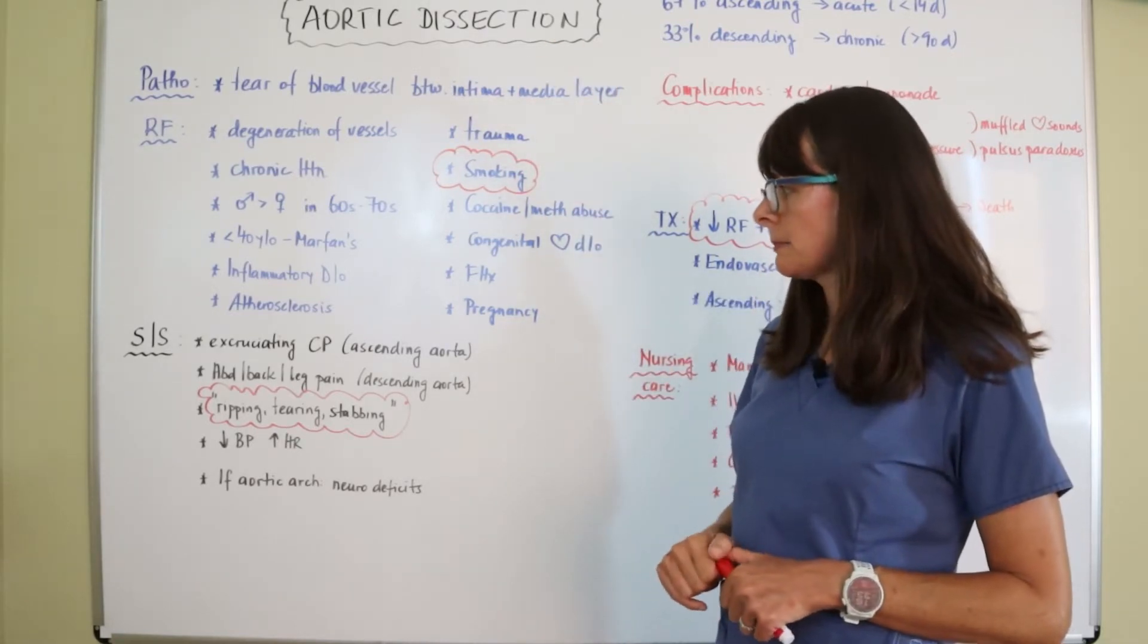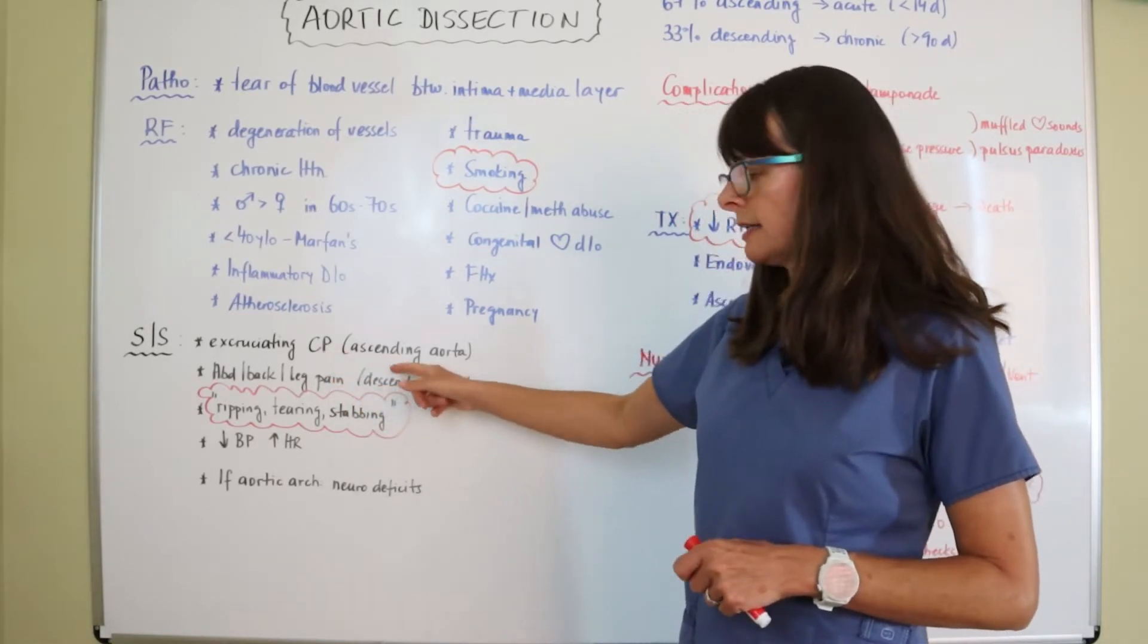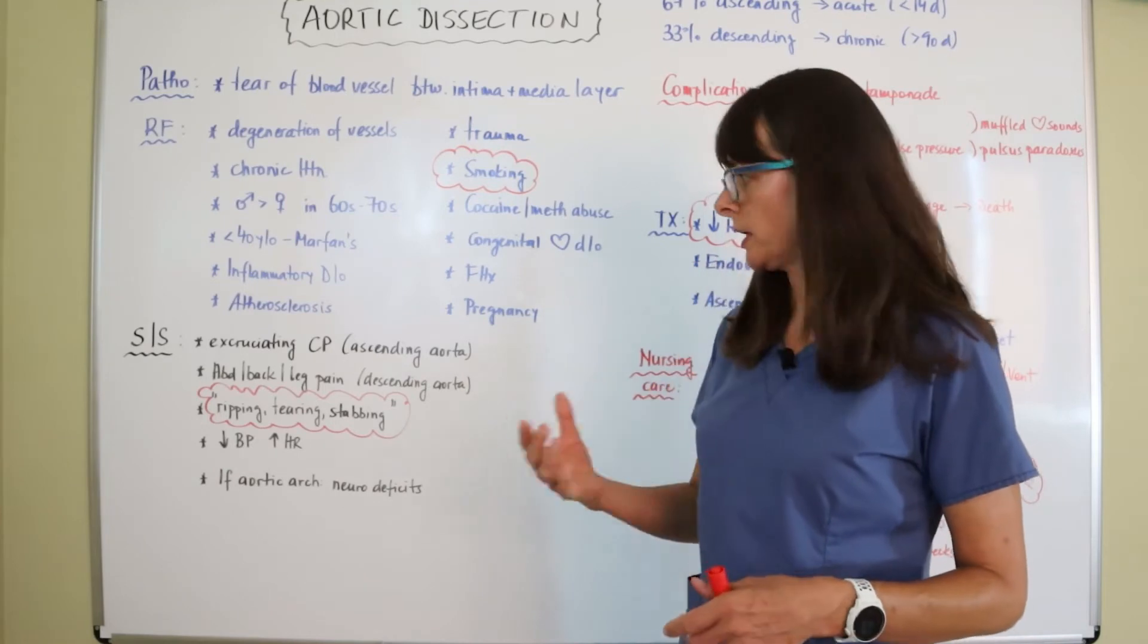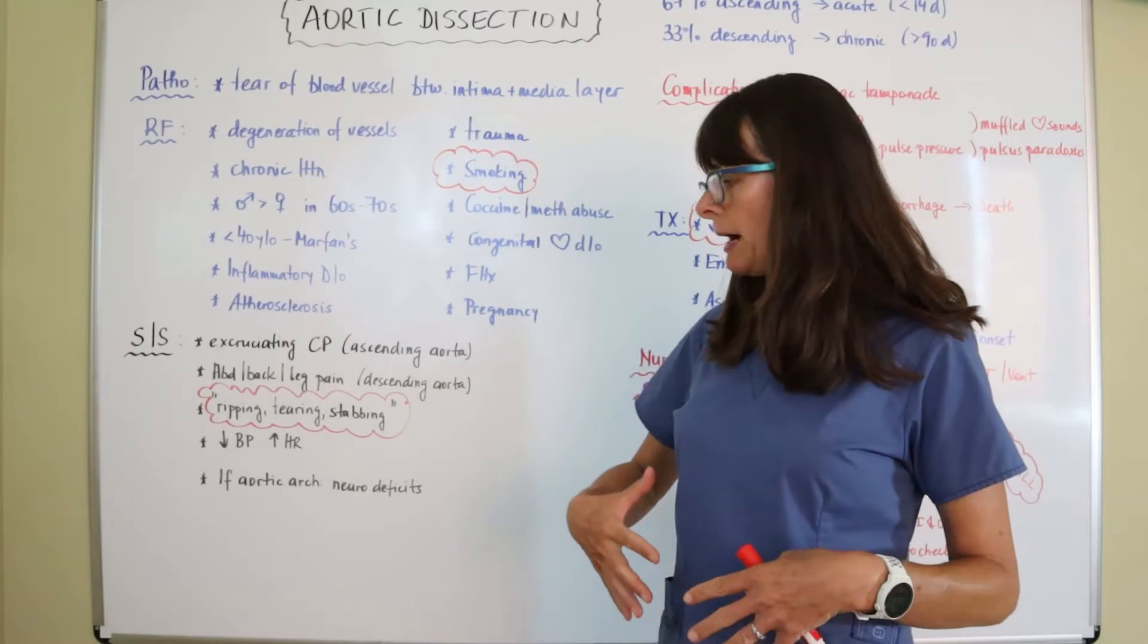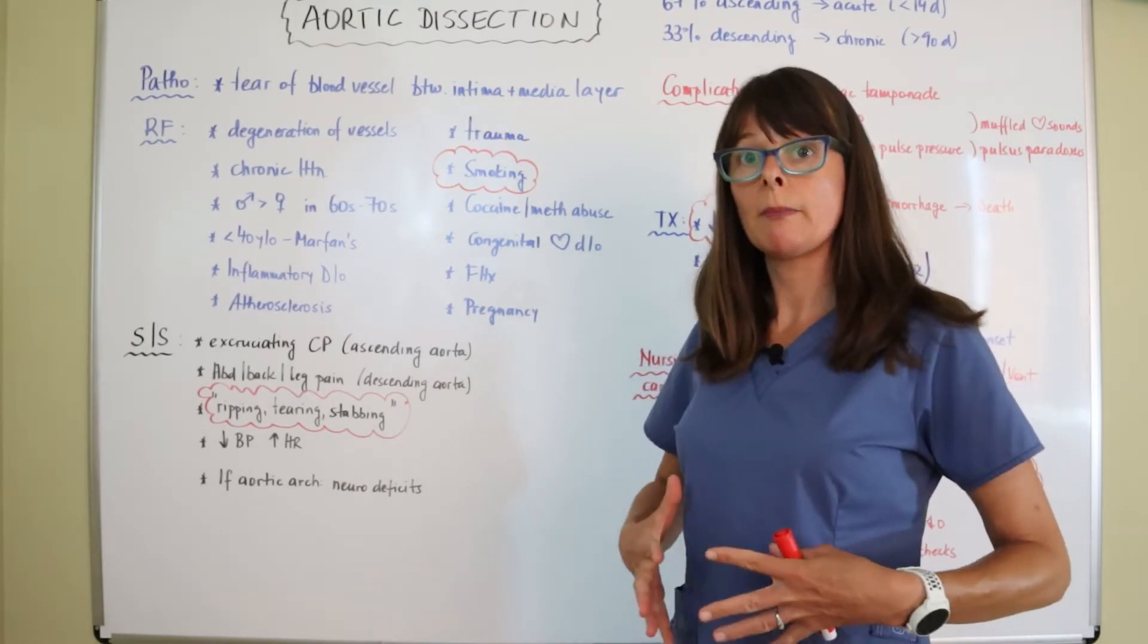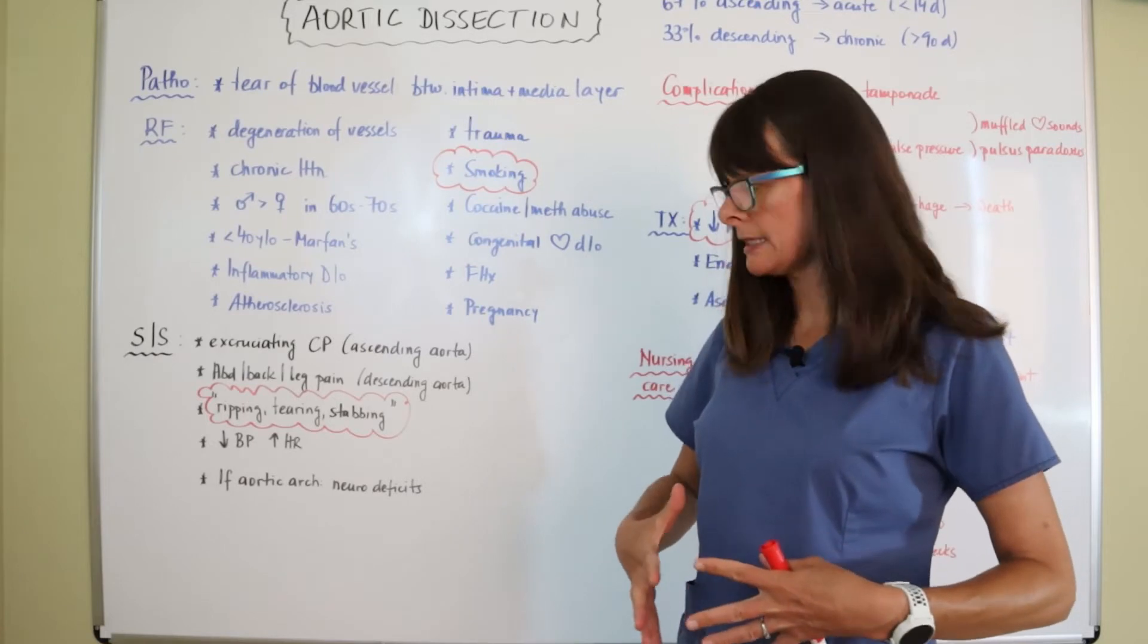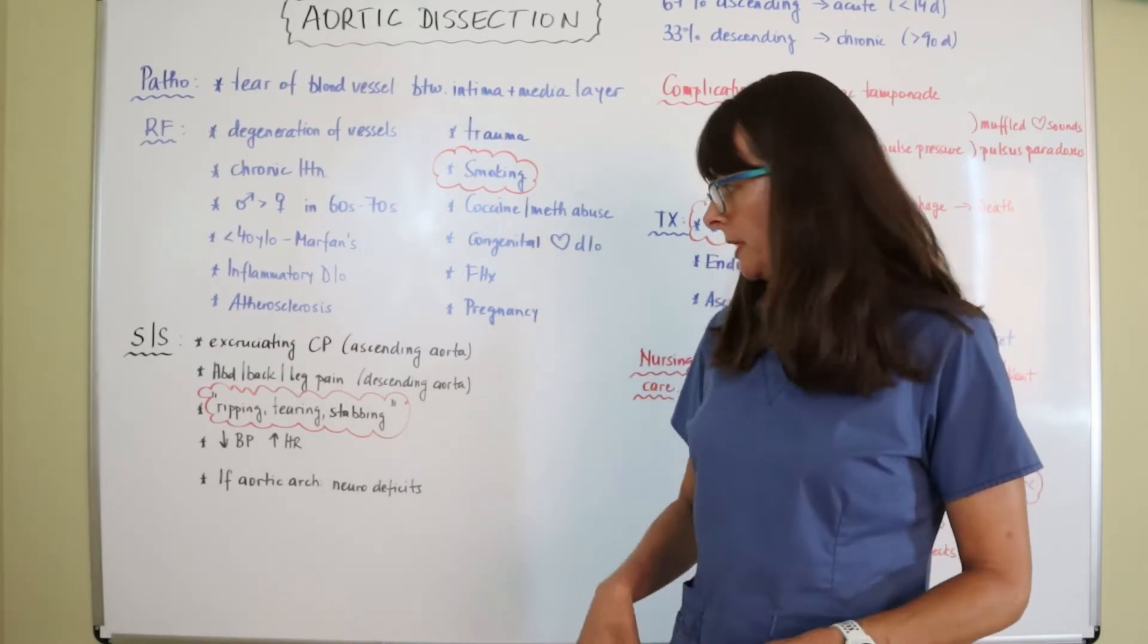So signs and symptoms will be excruciating chest pain if it's in the ascending aorta in this aortic arch area, or if it's in the descending aorta, it'd be more like abdominal back and leg pain as things start to kind of open up on the insides here as the artery starts to peel open from the inside.